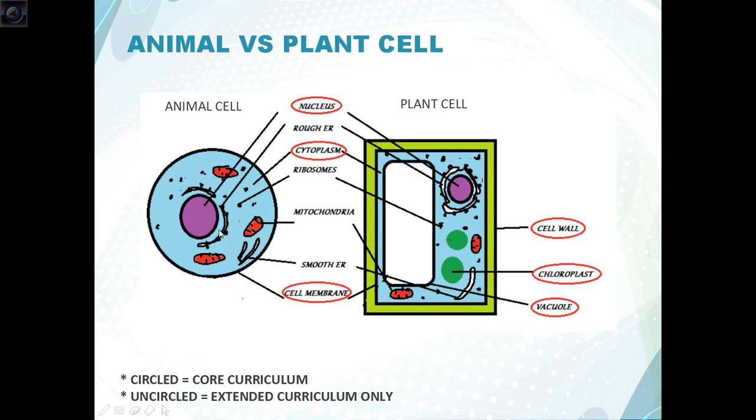So rough endoplasmic reticulum is a bunch of flattened sacs that circulate the nucleus. And it also has little black dots which are attached onto it.